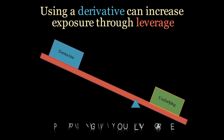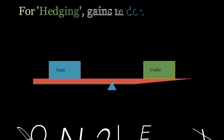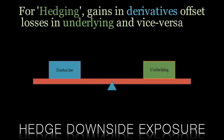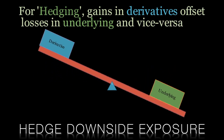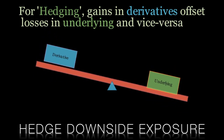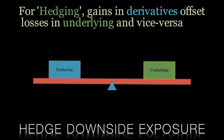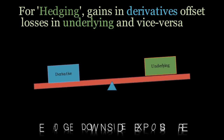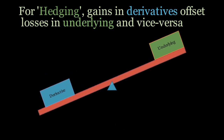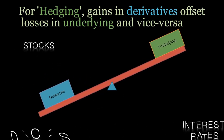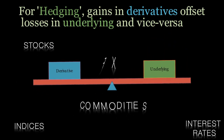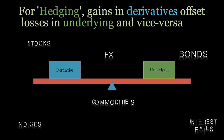Another advantage of options is flexible risk management. Traders can use options as hedges to limit their potential losses. Options can be traded on a variety of underlying assets including stocks, interest rates, indices, commodities, currencies and more.